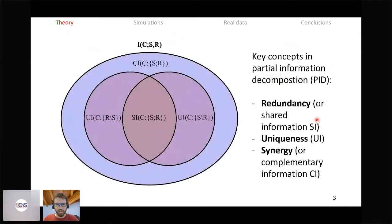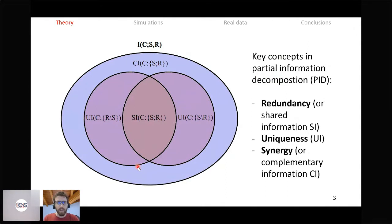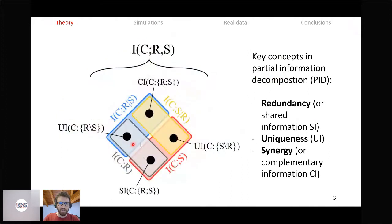Let's see how we can attack the problem using partial information decomposition. A quick review of the main concepts: the goal of PID is to decompose the information that a set of source variables — in this case stimulus S and neural response R — carry about a target, the choice C. There are four possible ways in which information is carried: shared information (available independently from S or R), two components of unique information (available only from R or only from S), and a component of synergistic or complementary information due to the interaction of the variables. Together they sum to the whole joint information.